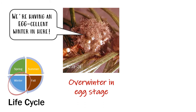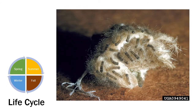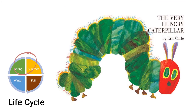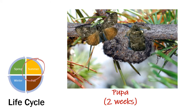The adults die before winter. The larvae hatch out in late spring and they are very hungry caterpillars. They feed on the needles of their host plant and disperse by ballooning on little silk threads. They pupate in late July on the underside of branches. After two weeks, the adults emerge from the pupae and begin the cycle again.